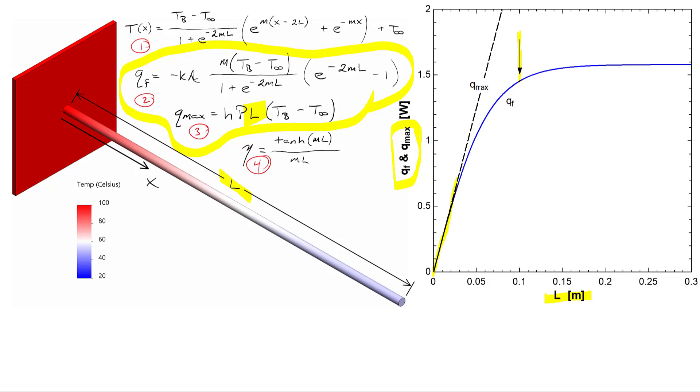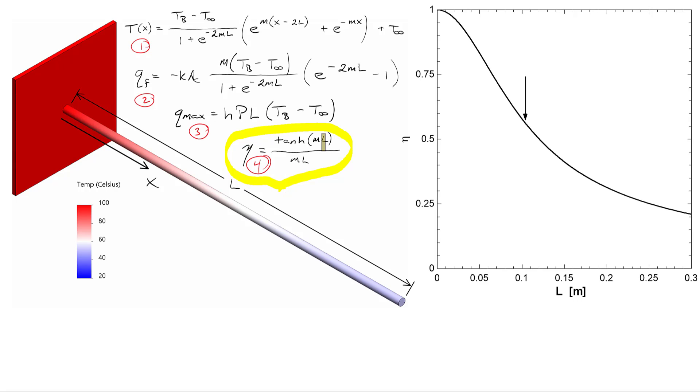However, as we continue making these fins longer and longer, the theoretical maximum, which grows linearly, exceeds that of the actual amount of heat being pulled out from the fin itself. So there's a bit of a diminishing return here. The longer we go with the fin, the less and less on a relative basis the amount of heat that we can pull out of the base. And as you can imagine, the ratio of QF to Q max becomes smaller and smaller as the length of the fin gets longer. And this is indeed what occurs when we plot eta as a function of the length, where again the arrow represents the length that we're dealing with right now.